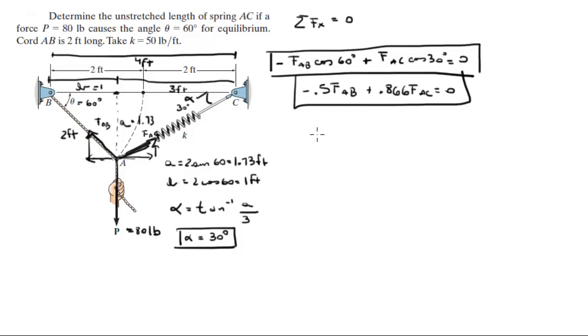Now we got this other formula that we know that the sum of the forces in the y is equal to 0. So this means that FAB times the sine of 60 plus FAC times the sine of 30 minus P which is 80 is equal to 0. So this I will write 0.866 FAB plus 0.5 FAC is equal to 80.